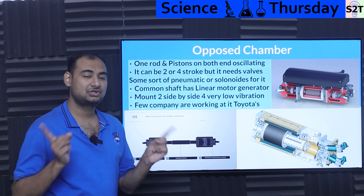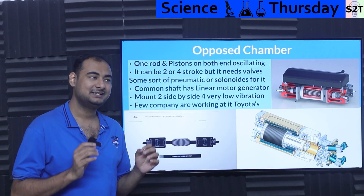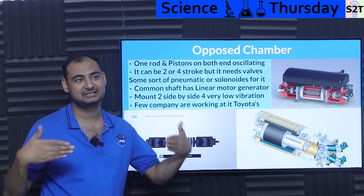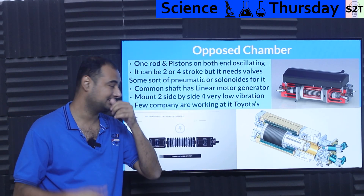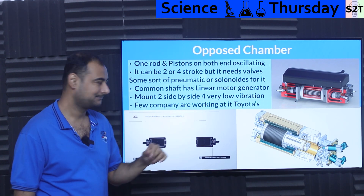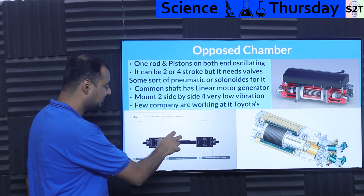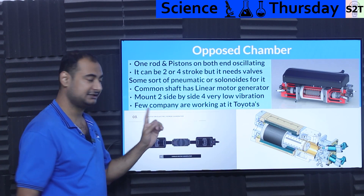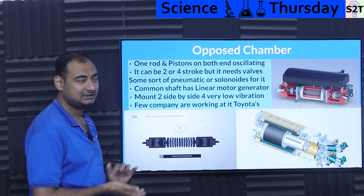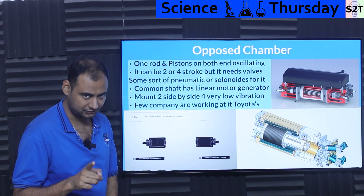Now we come to the opposed-chamber design. You have a common rod going back and forth with pistons on both ends inside chambers — it oscillates. The benefit of this design is that you can run two-stroke or four-stroke, and you can even mix: one side on four-stroke, the other on two-stroke.